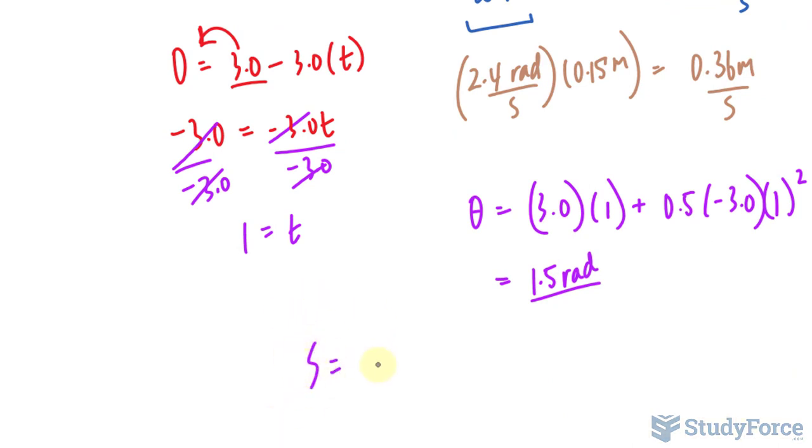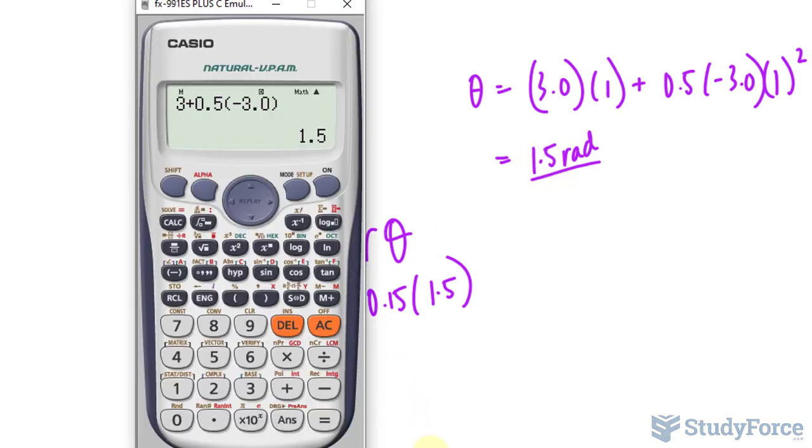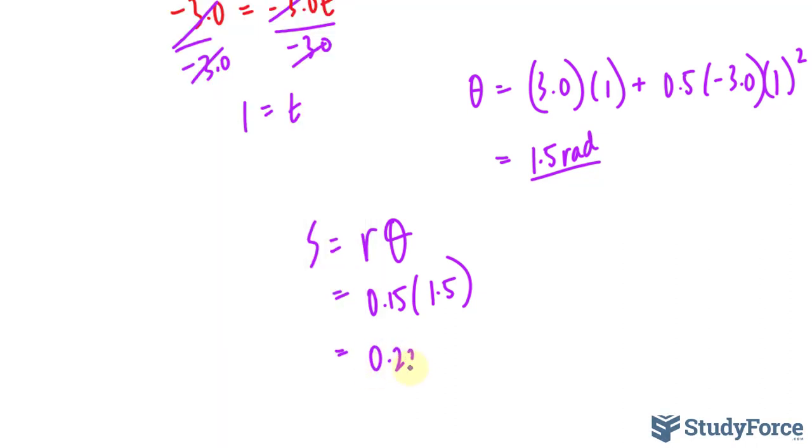So, the radius was 0.15 times 1.5, which we just calculated, and the displacement is the number on your screen times 0.15, and that is 0.22 meters.